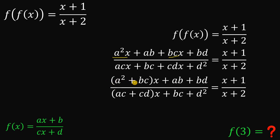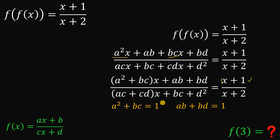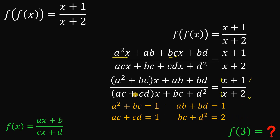Combining like terms and comparing the left-hand side to the right-hand side, we get four equations: a squared plus bc equals one, ab plus bd equals one, ac plus cd equals one, and bc plus d squared equals two. We now have four equations with four unknowns.